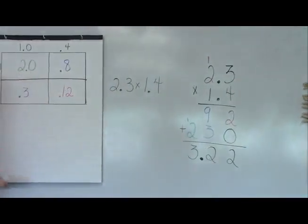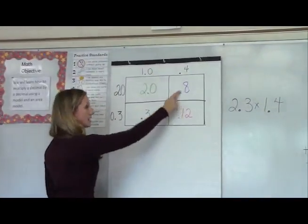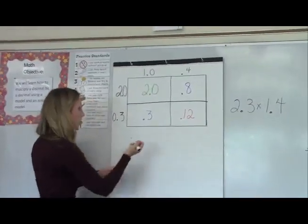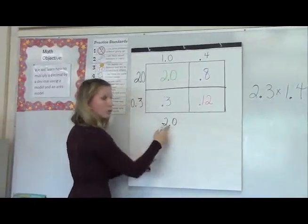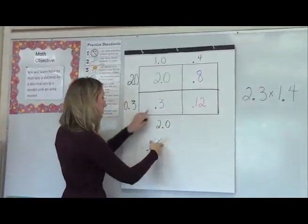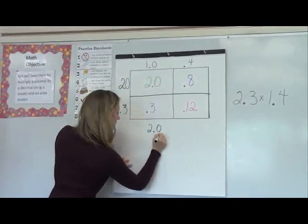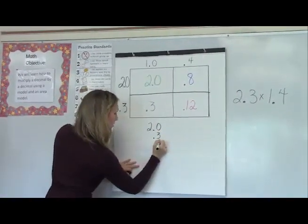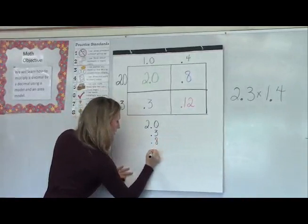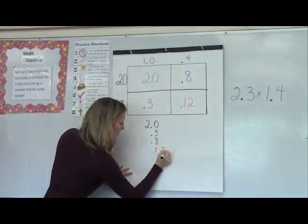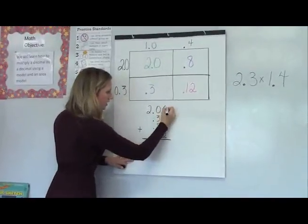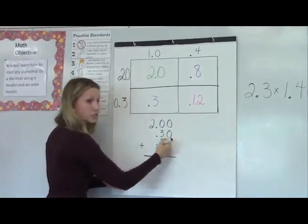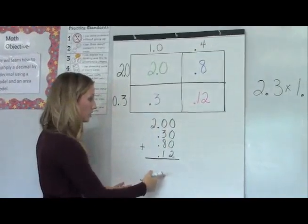To complete my open array, I'm going to simply add together my four smaller products. Remember, when we add decimals, we always want to line up our decimal points. That helps keep our places in order. I'm going to add zeros to represent that there is nothing in the hundredths place for those three numbers.